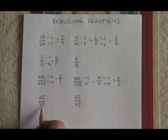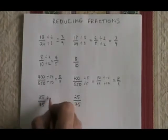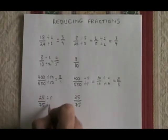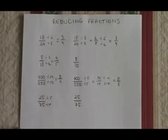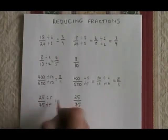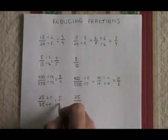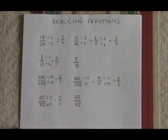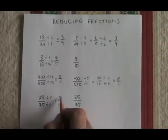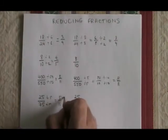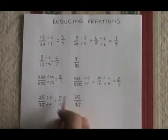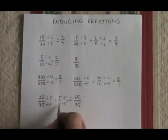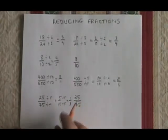25 over 75, well, I can see that they must have a common factor of 5, as they both end with 5. So if I divide both top and bottom by 5, I will get 5 over 15. But I am not finished, because 5 and 15 still have a common factor of 5 again. 5 divided by 5 is equal to 1, and 15 divided by 5 is 3. My answer is one-third.